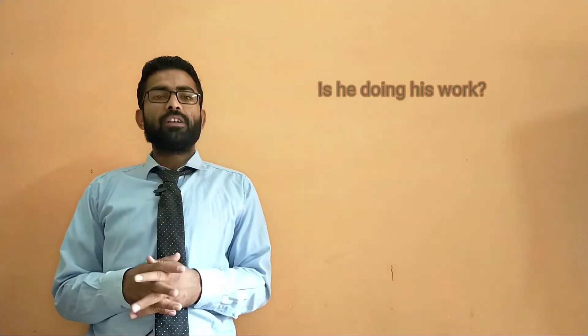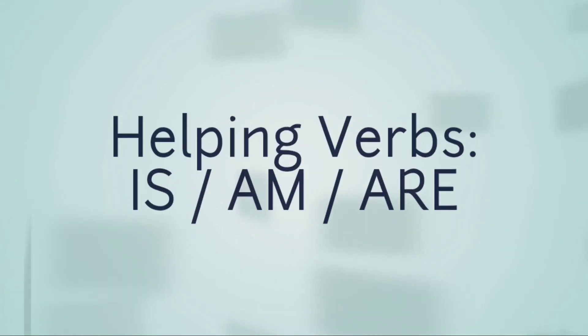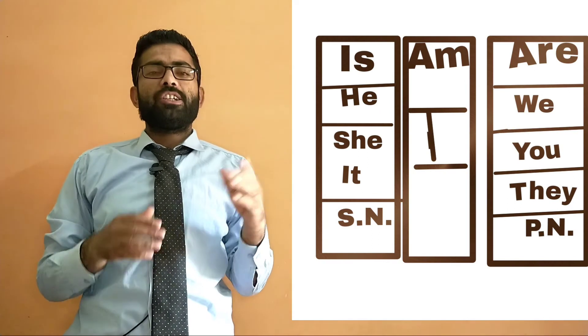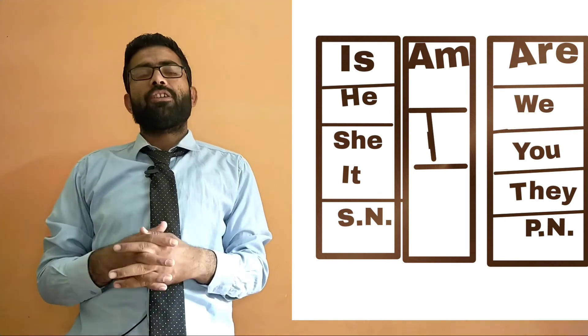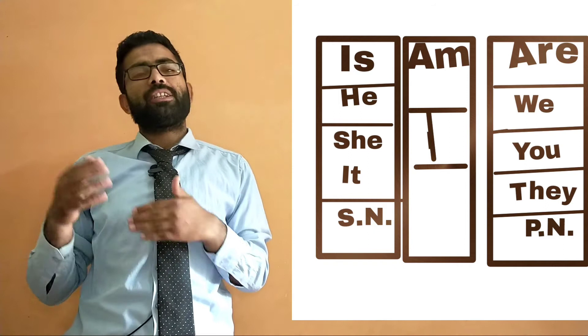Let's see what are the helping verbs in present continuous tense. Present continuous tense has got three helping verbs: is, am, and are. Is is used with he, she, it, and singular noun. Am is used with I.